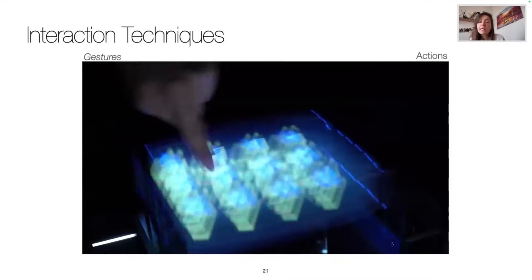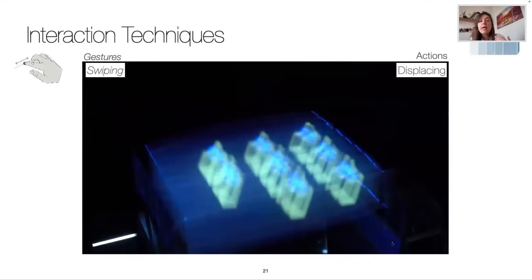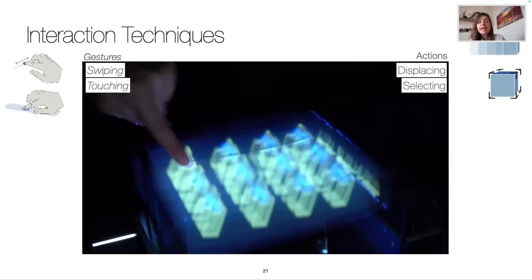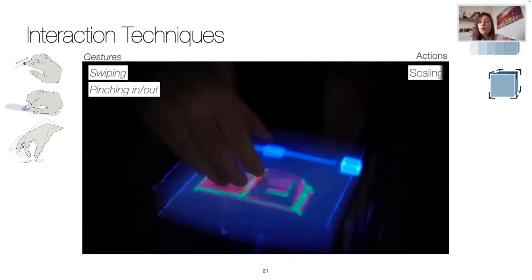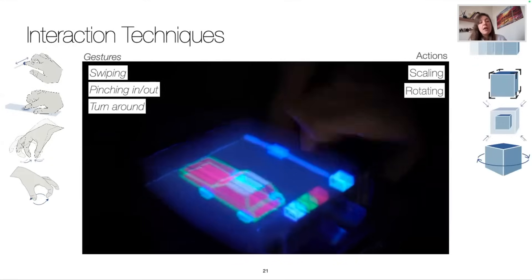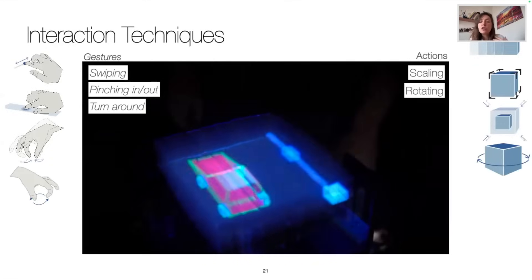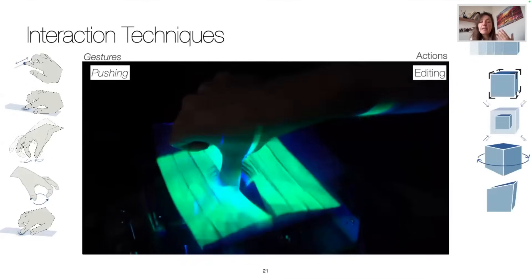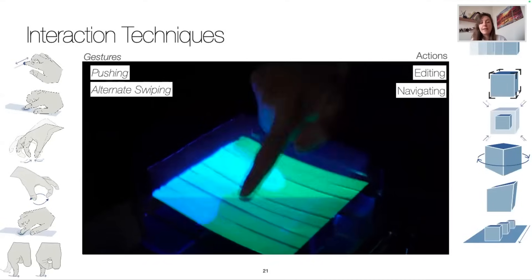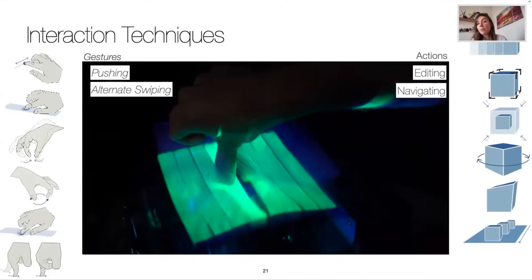So first, a user can swipe in the display volume and touch to select. A user can also scale an object using a menu or pinch it in and out, and can rotate objects. A user can also push onto the strips to edit, let's say, a landscape, and navigate performing alternate swiping.